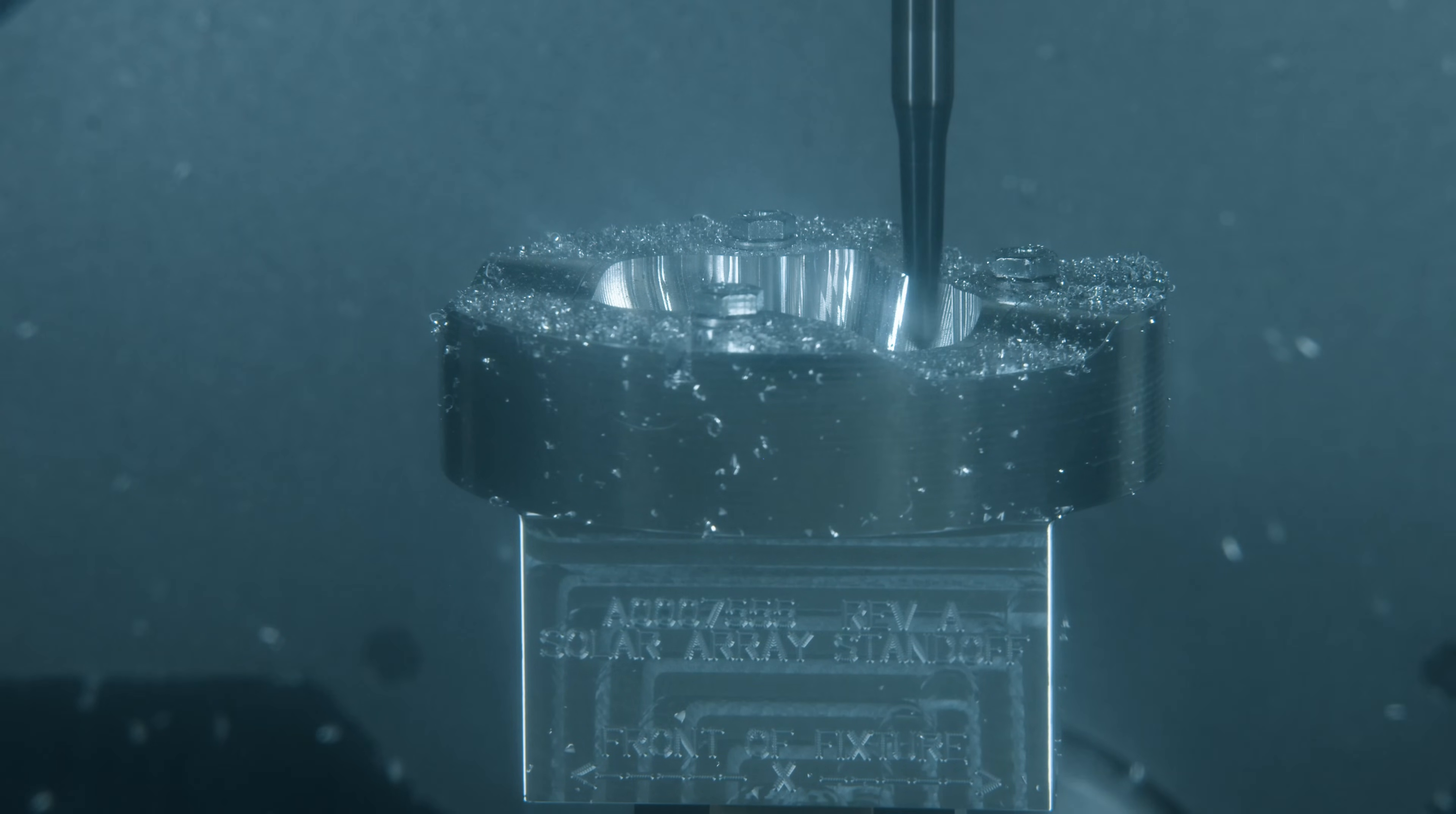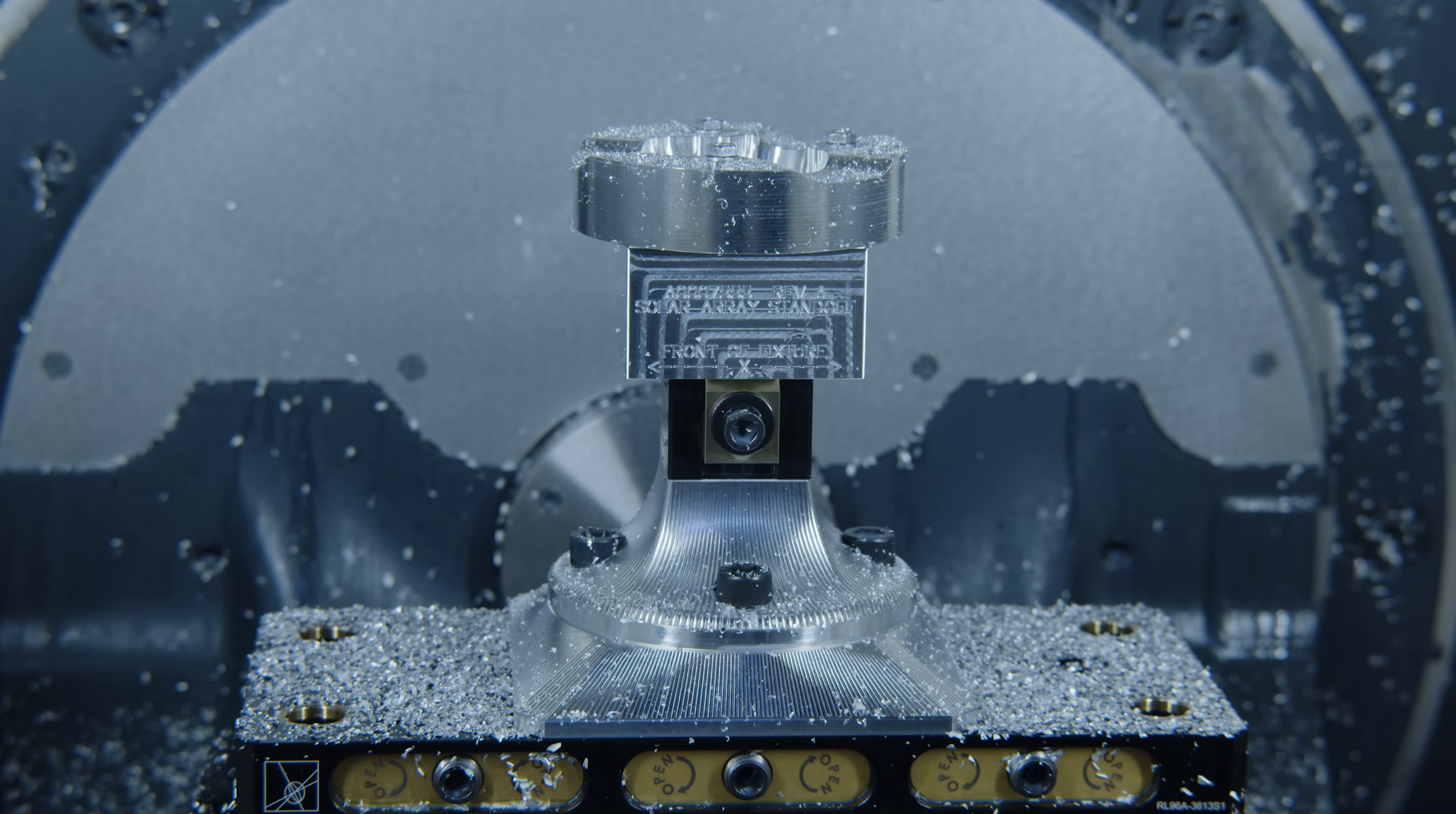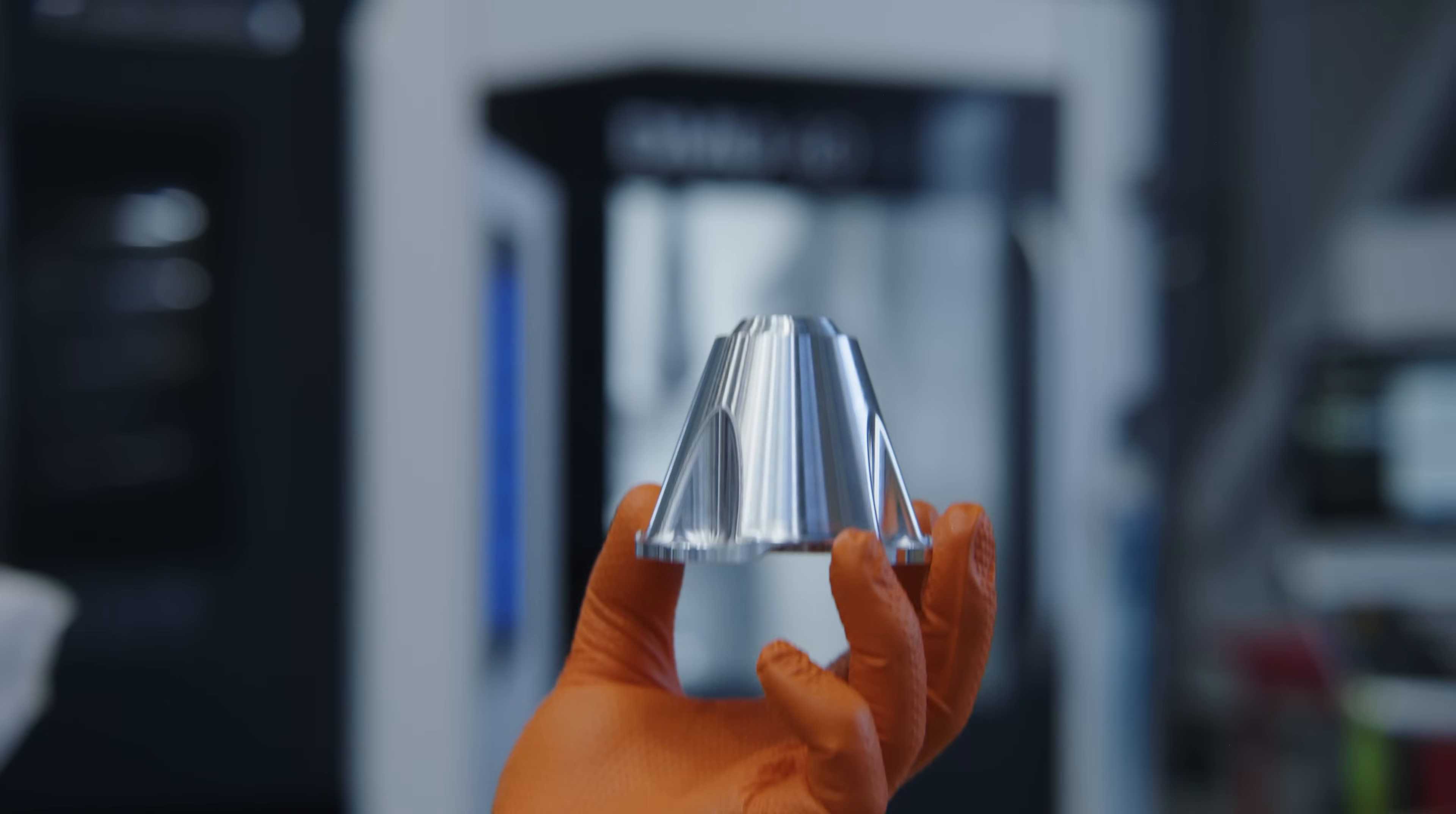To finish it all off we deburr the part using the same tapered ball end mill as before and the part's done. The final weight of the part went from five pounds down to just one tenth of a pound.